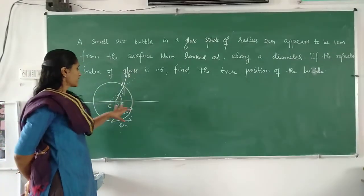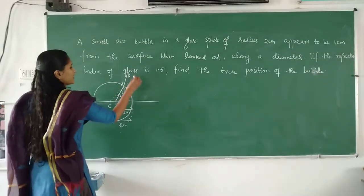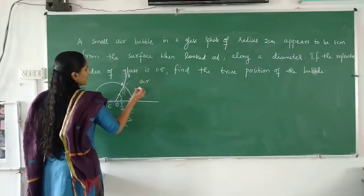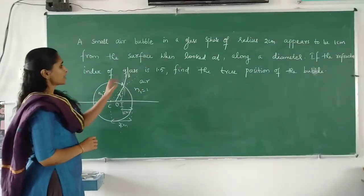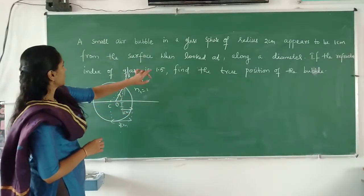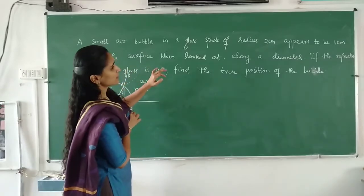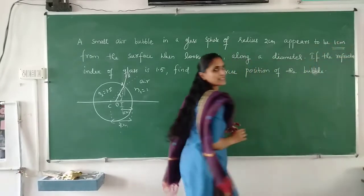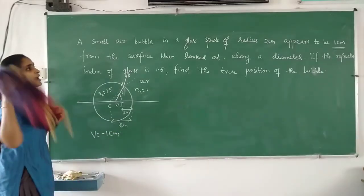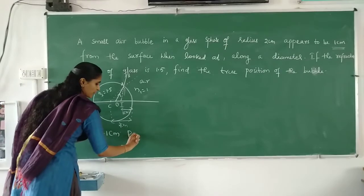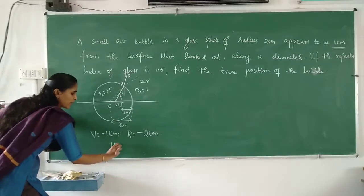In the diagram, O is the position of the object, OA is the incident ray and AB is the refracted ray. The refractive index of glass is 1.5 and air is outside. The image distance is given - it appears to be 1 cm from the surface, so image distance V is minus 1 cm. The radius is 2 cm, so R is minus 2 cm. We have to find the object distance U.